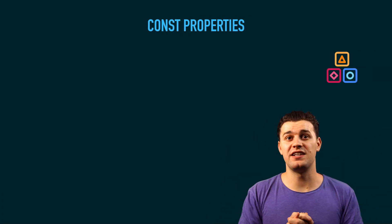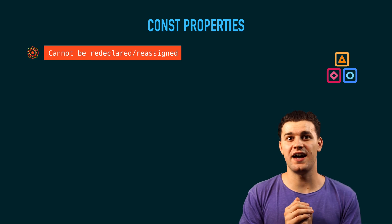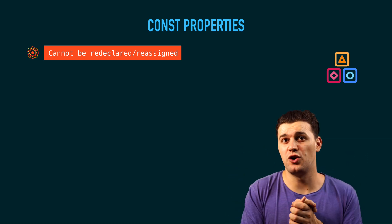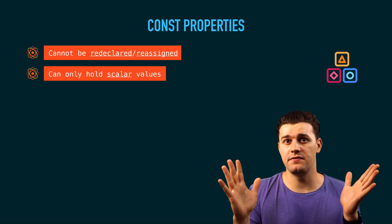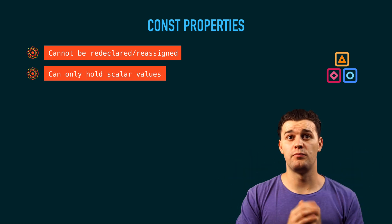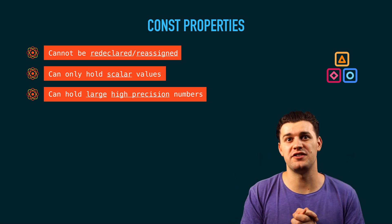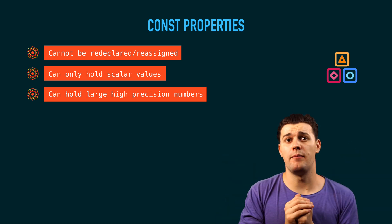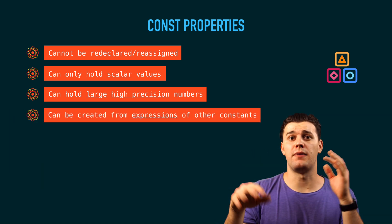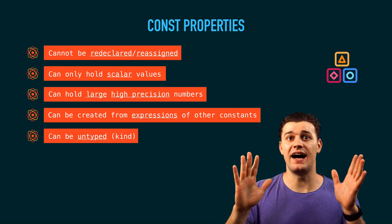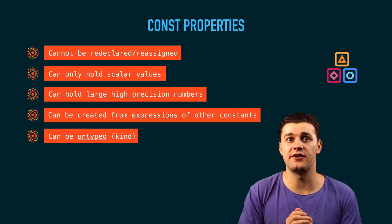Now that I showed you where exactly the repo is, let's dive into the topic and talk about those things which I said are overlooked in Go. There are specific properties which make constants unique. The first one is they cannot be redeclared or reassigned. Another important thing is that they can only hold scalar values, also known as primitive values in other languages. They can also hold large high-precision numbers, and they can be created from expressions by combining multiple constants to form a new constant.